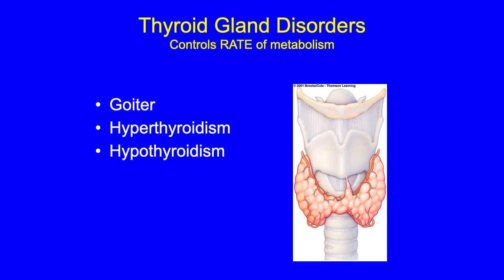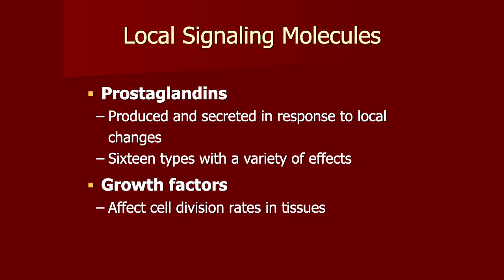Thyroid gland disorders affect the rate of metabolism. These include goiter, hyperthyroidism, and hypothyroidism. Local signaling molecules — prostaglandins — are produced and secreted in response to local changes, with 16 types having a variety of effects. Growth factors affect different cell division rates in tissues.